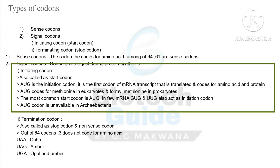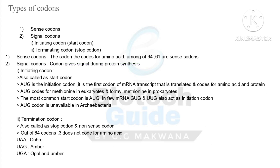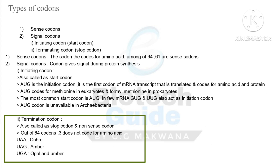AUG codes for methionine in eukaryotes and formyl-methionine in prokaryotes — a very important point. The most common start codon is AUG, but in a few mRNAs, GUG and UUG also act as initiation codons. AUG is unavailable in some archaea and bacteria. Regarding termination codons — also called stop codons or nonsense codons — out of 64, three do not code for any amino acid: UAA (Ochre), UAG (Amber), and UGA (Opal). These are the types of codons and their important points.